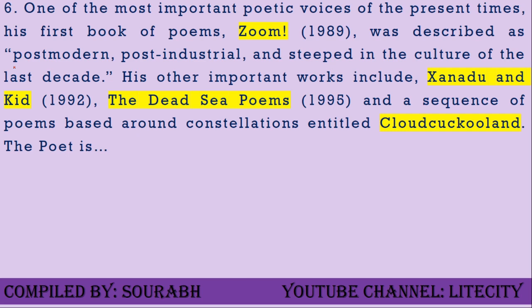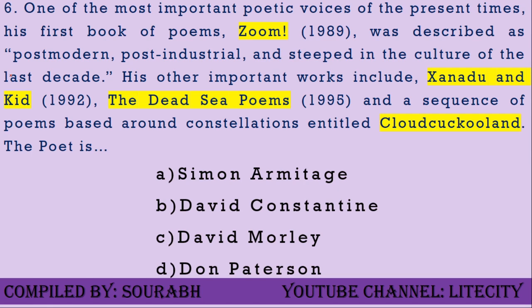Question six: One of the most important poetic voices of the present times. His first book of poems, 'Zoom!' published in 1989, was described as postmodern, post-industrial, and esteemed in the culture of the last decade. His other important works include 'Xanadu' and 'Kid' in 1992, 'The Dead Sea Poems' in 1995, and a sequence of poems based around constellations entitled 'Cloud Cuckoo Land.' Who is this poet? Options: Simon Armitage, David Constantine, David Morley, or Don Paterson.